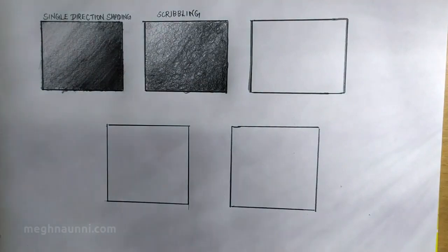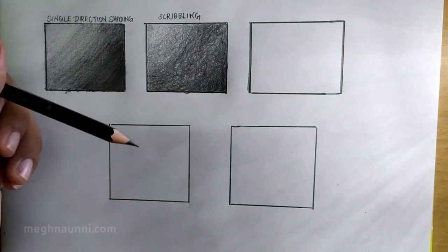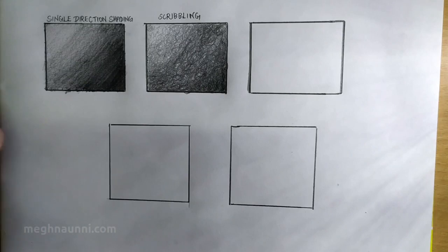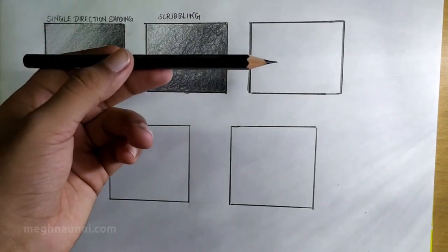The next method is stippling, which in fact is the most difficult method of all the 5 methods. You need to keep your pencil tip really sharp for this one.